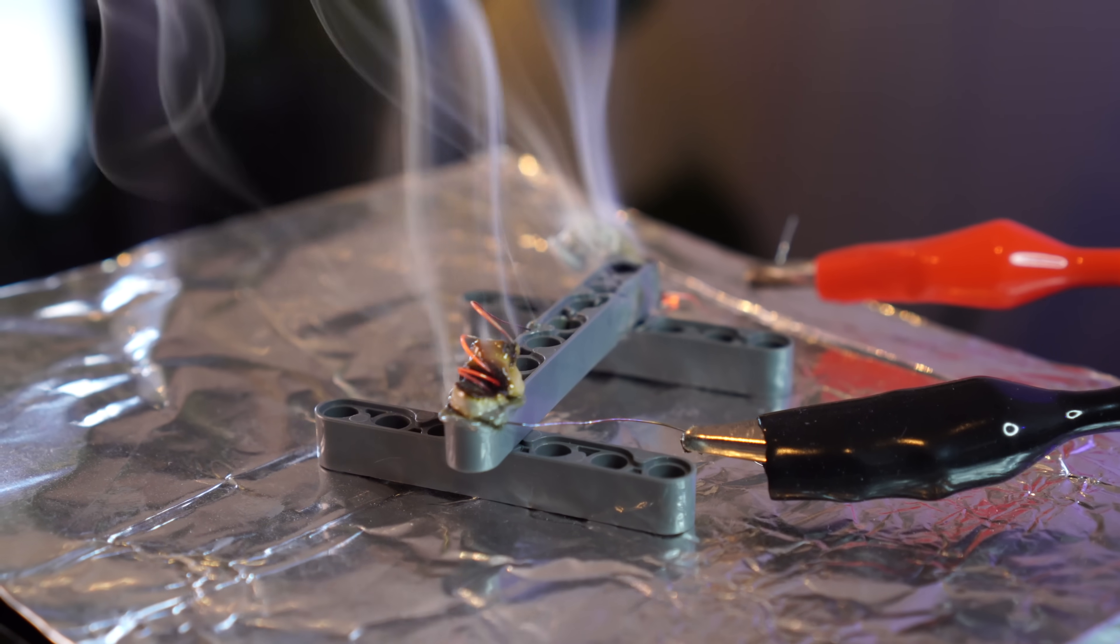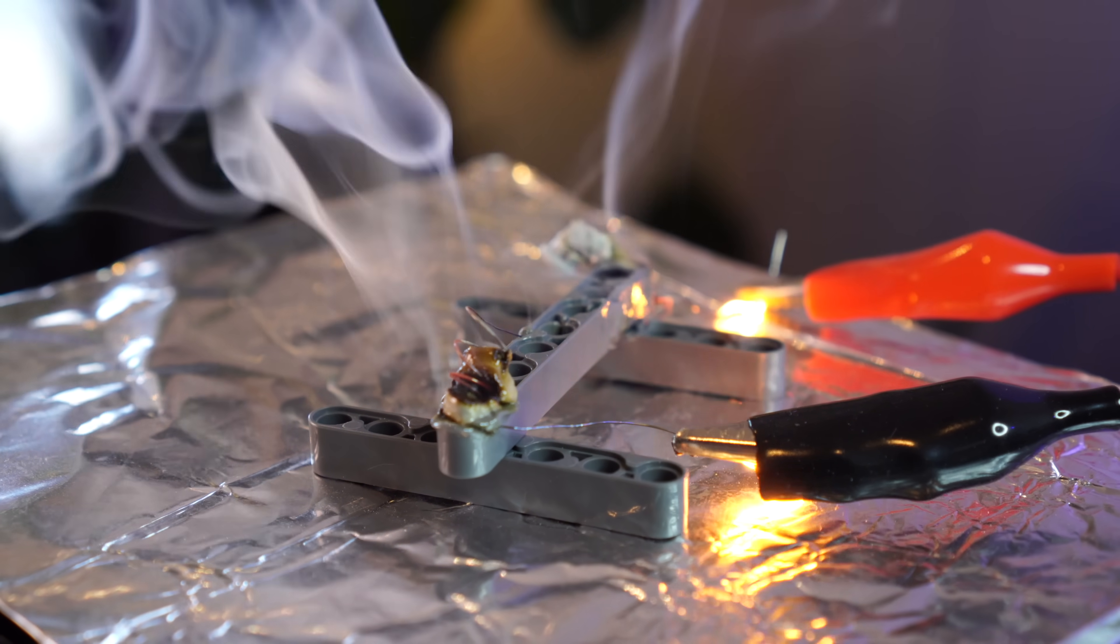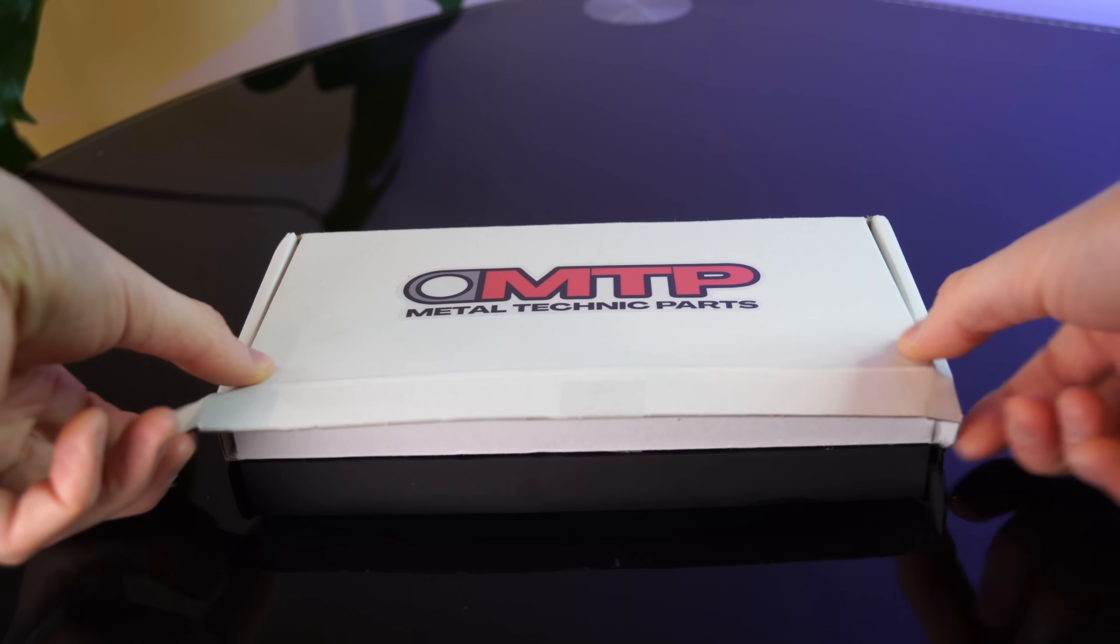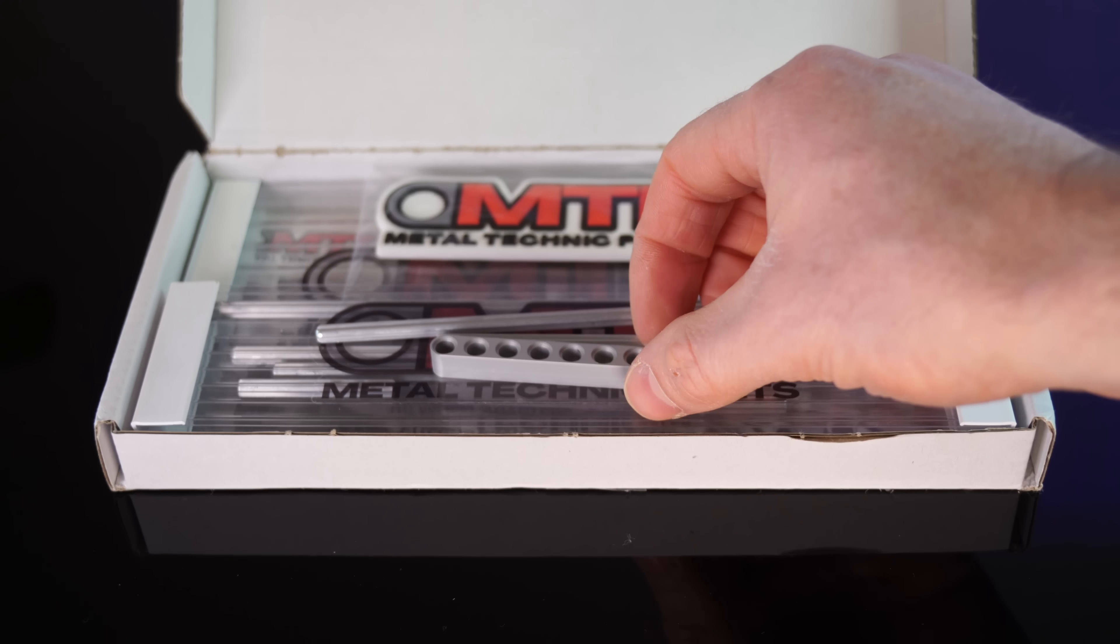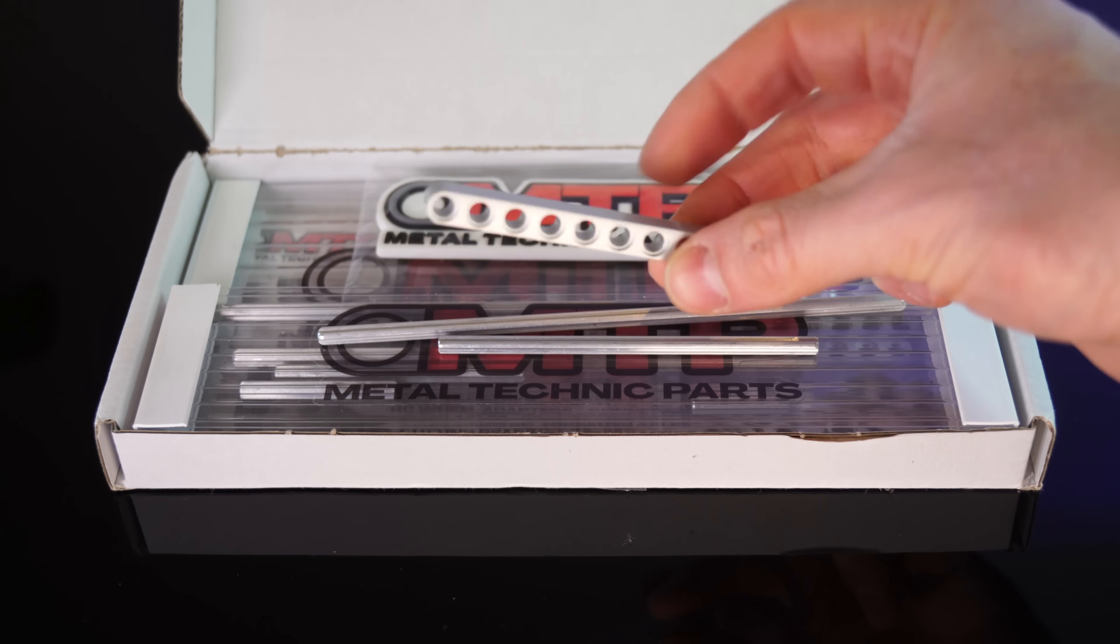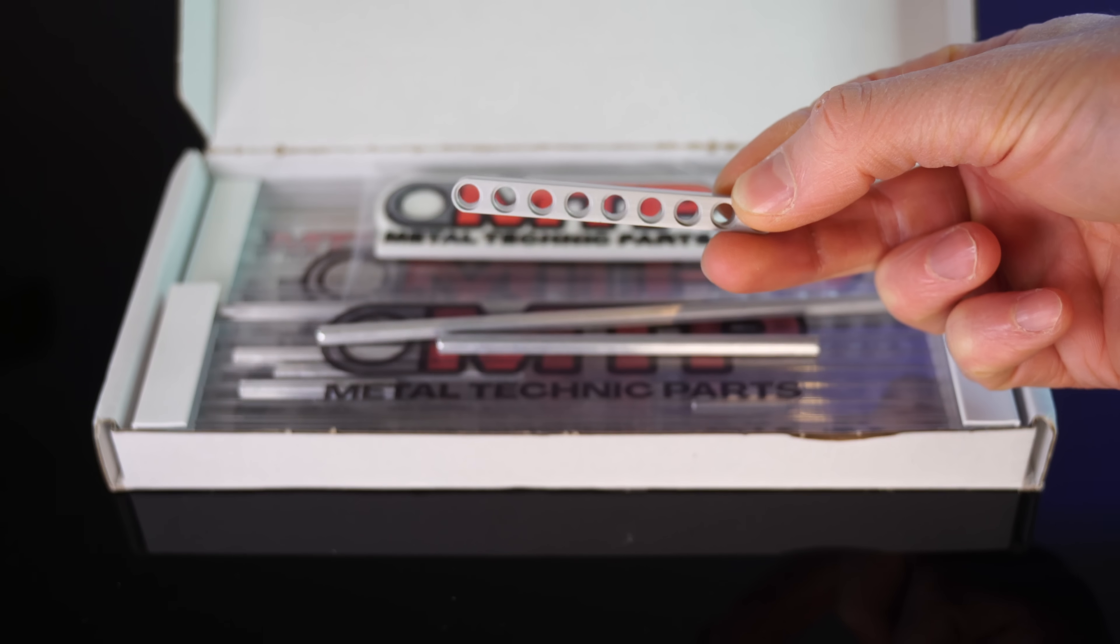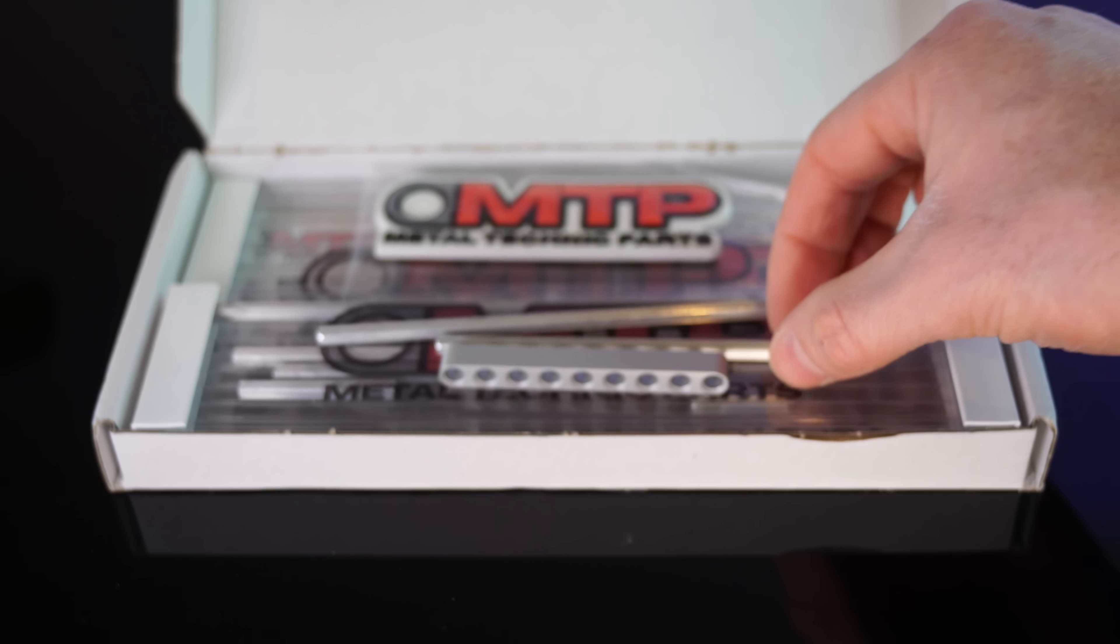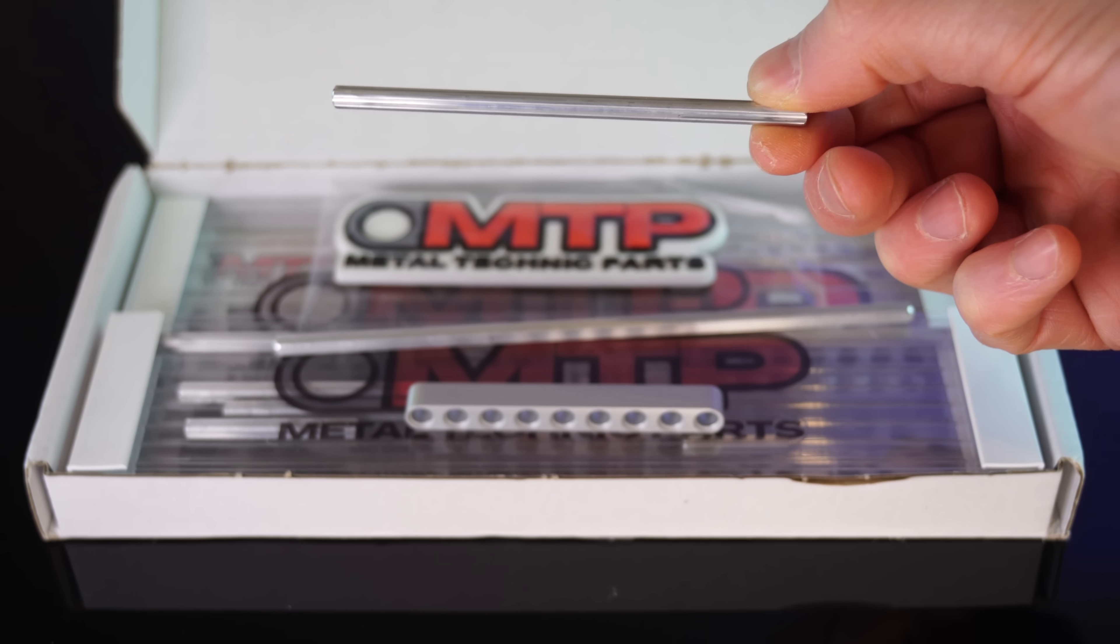But how exactly do we prevent our Lego from melting like this? Well, one way is by using these pieces. These are made of aluminum and should be able to handle the heat. Now I'm not sponsored by MTP by the way, I just think their pieces are really cool and very helpful for builds like this.